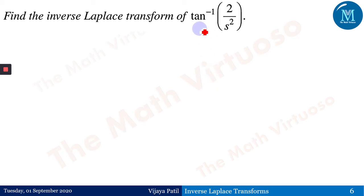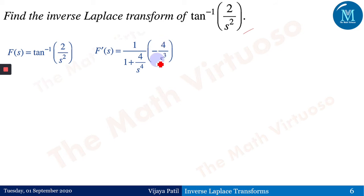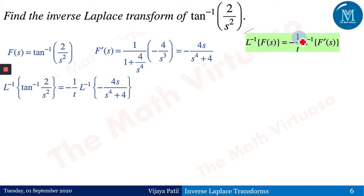Now let us do one which is different from the last two questions. F(s) = tan⁻¹(2/s²). Differentiating using d/ds[tan⁻¹(x)] = 1/(1+x²) · dx/ds, we get F'(s) = 1/(1+(2/s²)²) · d/ds(2/s²) = 1/(1+4/s⁴) · (−4/s³), which simplifies to −4s/(s⁴+4). Applying the property: inverse Laplace of F(s) = −(1/t) · inverse Laplace of (−4s/(s⁴+4)).